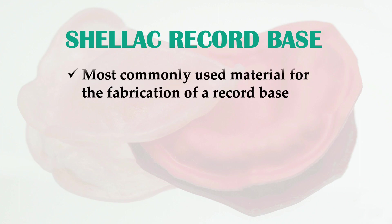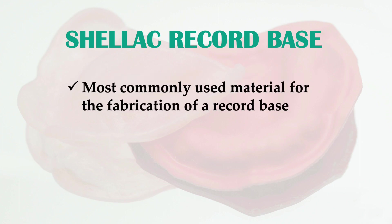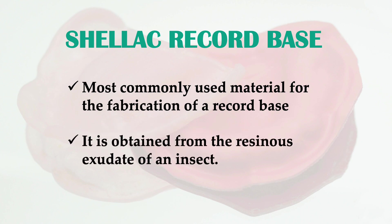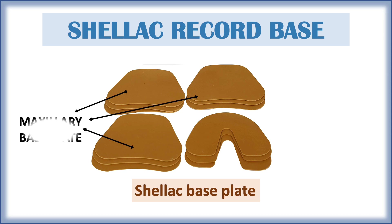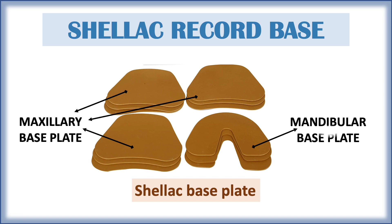The shellac record base is the most commonly used material for fabrication of a record base, and it is obtained from the resinous exudate of an insect. As seen in the figure, the upper three are the maxillary base plates, and the U-shaped one is the mandibular base plate, because in the mandible we don't have a palate.